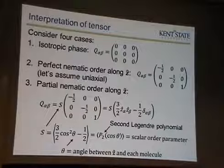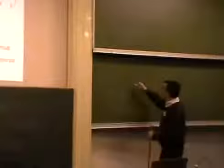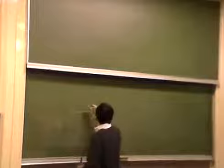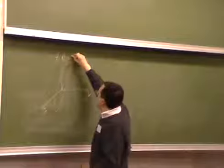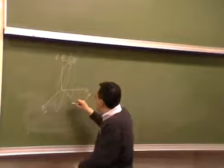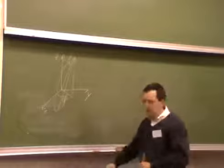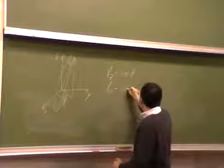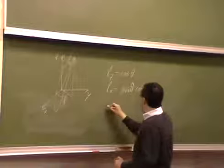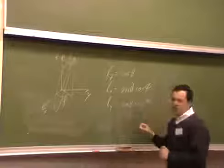S works out to be (3/2) times the average of cosine squared θ minus 1/2. We can see that if we represent the orientation in spherical coordinates with respect to axes X, Y, Z. Here a molecule has some orientation with polar angle θ and azimuthal angle φ. Then L_Z = cos θ, L_X = sin θ cos φ, L_Y = sin θ sin φ.